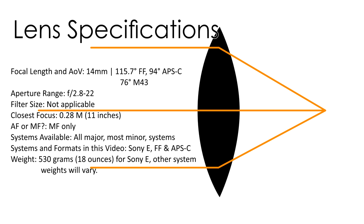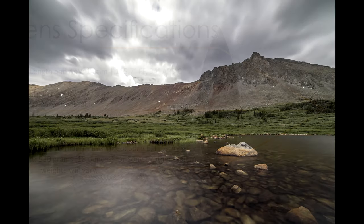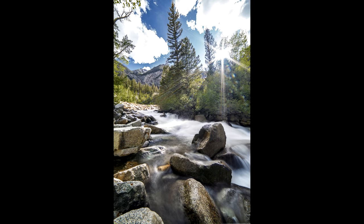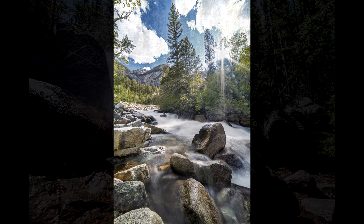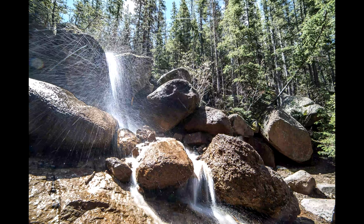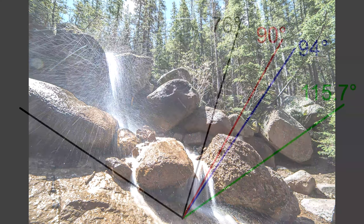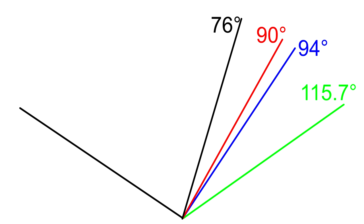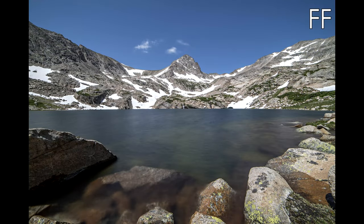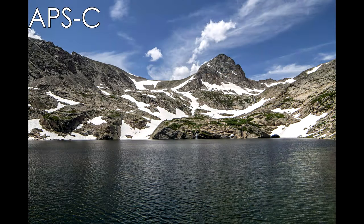The focal length and angle of view on this lens vary by the camera you put it on. It's a 14mm focal length, and on full frame — something like a Sony A7S III, Canon 5D, or Pentax K1 depending on which mount you get — the lens has a 115.7 degree field of view. I believe those field of view figures are diagonal. For APS-C cameras it's 94 degrees, or 90 degrees for Canon APS-C with its 1.6 crop factor.